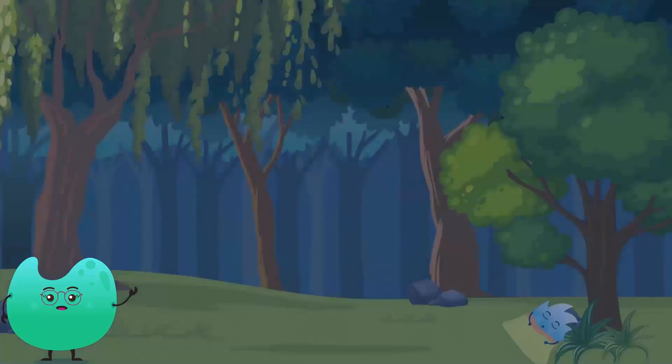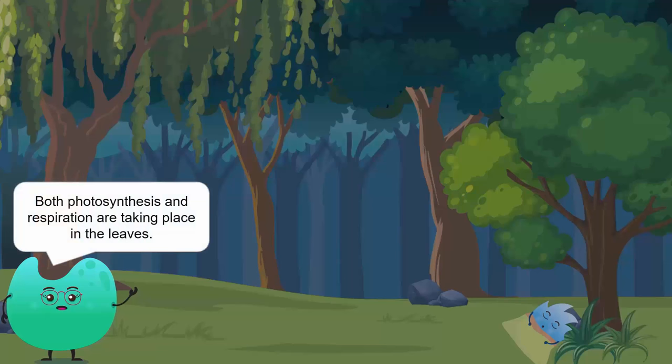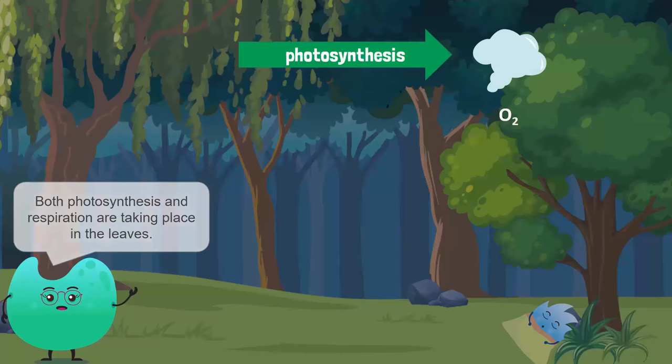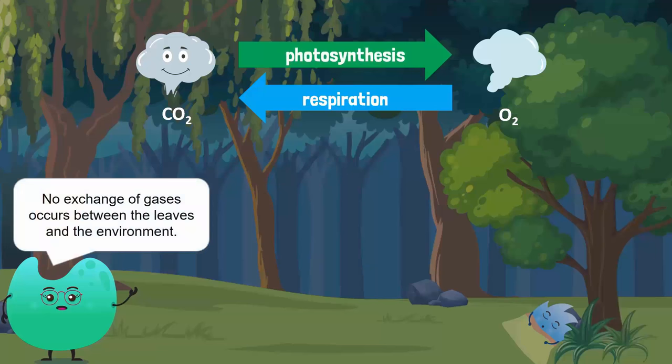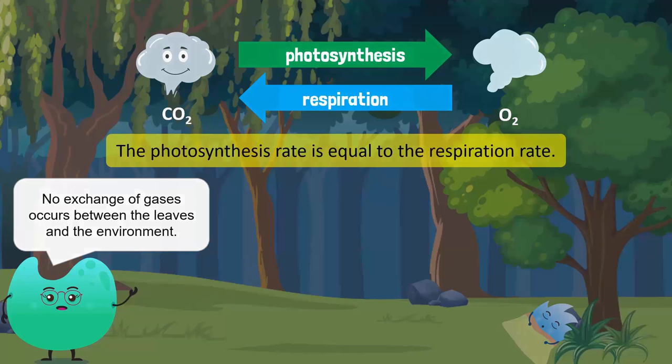Now, let's fast forward to a few hours later when there is dim sunlight to brighten the early morning sky. At this time, both photosynthesis and respiration are taking place in the leaves of the tree. The oxygen produced by photosynthesis is being used for respiration, and in turn, the carbon dioxide produced by respiration is being used for photosynthesis. As a result, no exchange of gases occurs between the leaves and the environment. The photosynthesis rate is equal to the respiration rate.